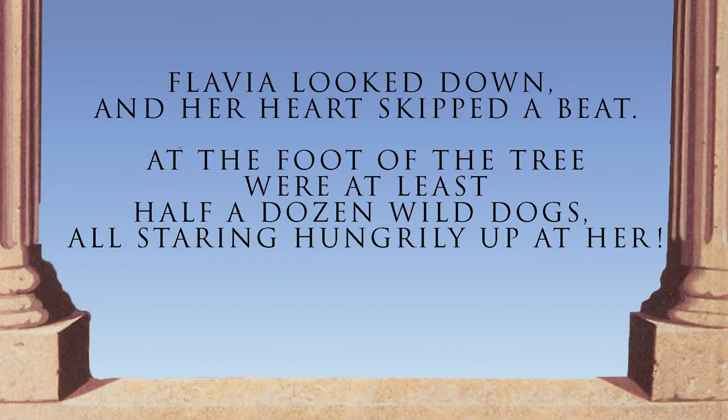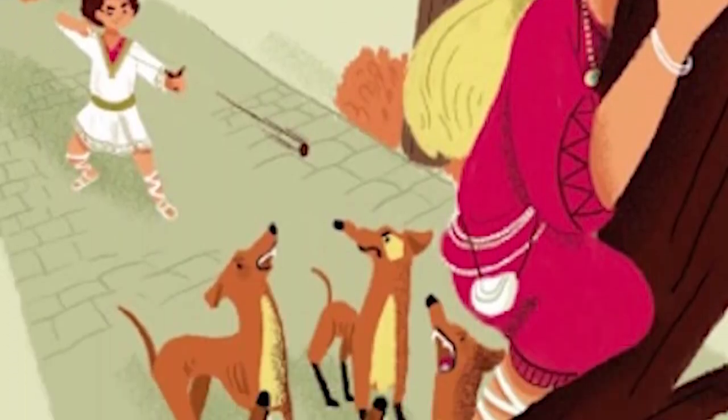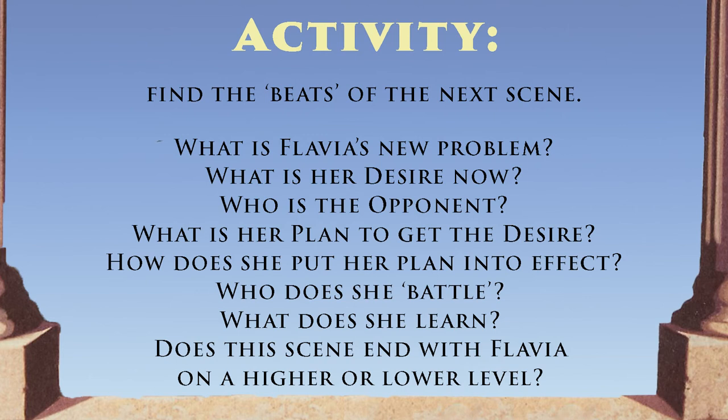This is a really nice exercise in being observant about story. The first chapter of 'The Thieves of Ostia' ends with Flavia looking down to find at least half a dozen wild dogs staring hungrily up at her. See if you can find the beats of the next scene: What is Flavia's new problem? What is her desire? Who is her opponent? What is her plan? How does she put it into effect? Who does she battle? What does she learn? And does the scene end with Flavia on a higher or lower level? Have a read and see if you can work it out for yourself.